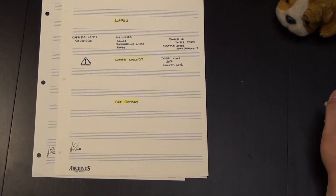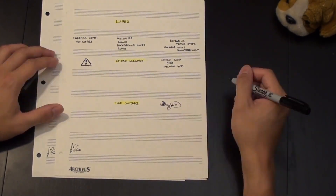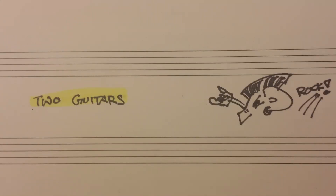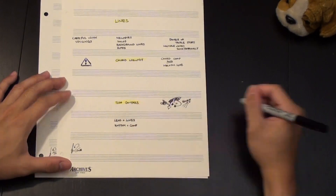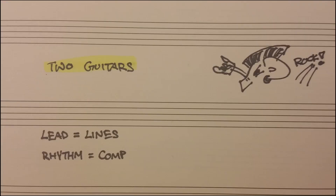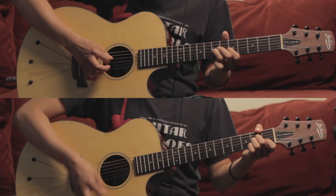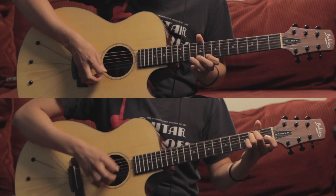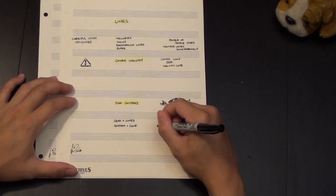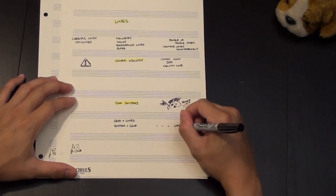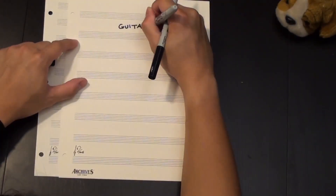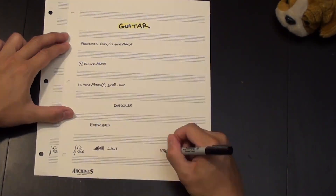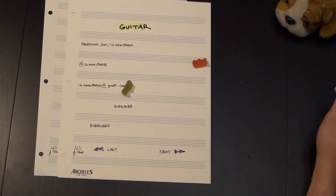Another option which you see in many rock bands is to simply have two guitars playing lead and rhythm. The lead player plays lines, melodies, and solos, while the rhythm player comps and plays chords. In fact, there are so many things you can do with multiple guitars that we'll leave the rest for its own episode. So that's writing for guitar — try it out on your own, and keep on rockin'.